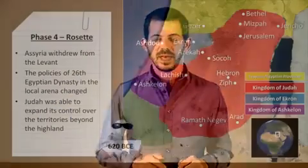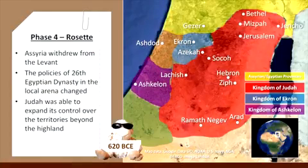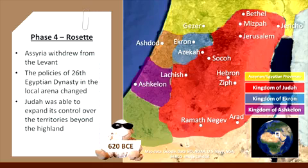One can assume that the major shift in Judah's situation resulted from the changing geopolitical conditions of the late 7th century BCE. As you learned with Oded, Assyria withdrew from the Levant, the policies of the 26th Egyptian dynasty in the local arena changed, and Judah was able to expand its control over the territories beyond the highlands.